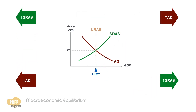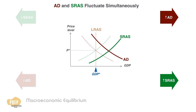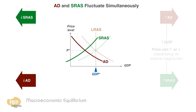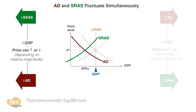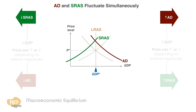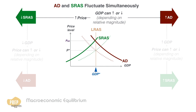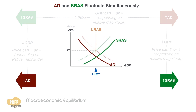More often than not, both aggregate demand and aggregate supply fluctuate simultaneously in the short-run. If both AD and SRAS increase, real GDP increases, but the price level can be up or down depending on the relative magnitude of the movements. If both AD and SRAS decrease, real GDP decreases, and similarly, the price level can be up or down depending on the relative magnitude. If AD increases and SRAS decreases, the price level will increase, but real GDP can increase or decrease depending on the relative magnitude. And if AD decreases and SRAS increases, the price level will decrease, but real GDP can increase or decrease depending on the relative magnitude of the movements.